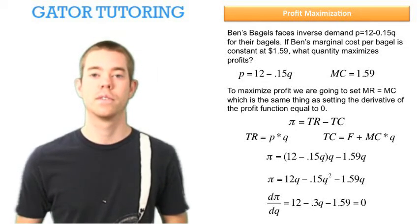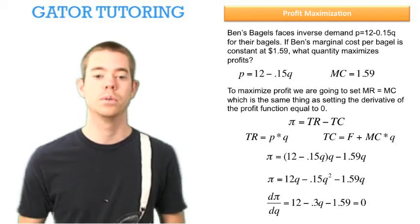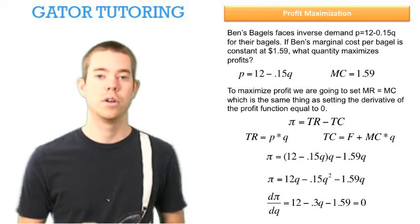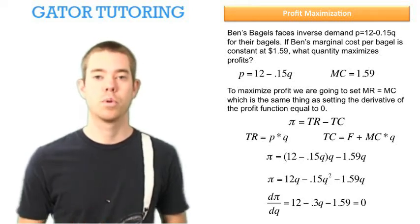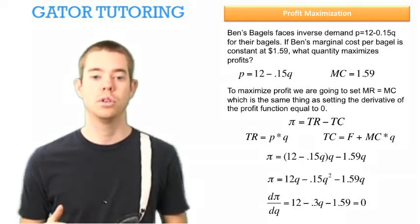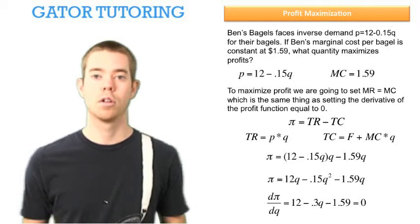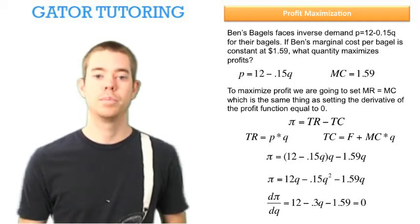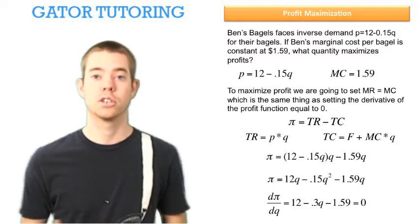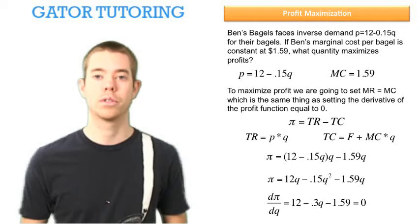We take the derivative of this and we get 12 minus 0.3Q minus 1.59 equals zero. Now notice the trick. The 12 minus 0.15Q times Q, all we do is double the slope there, and we get 12 because the Q distributes through and it drops in the derivative, and the 0.15Q squared is just like doubling 0.15 to get 0.3Q.